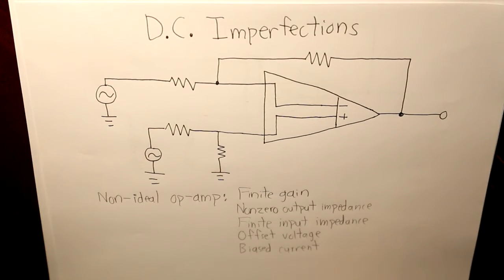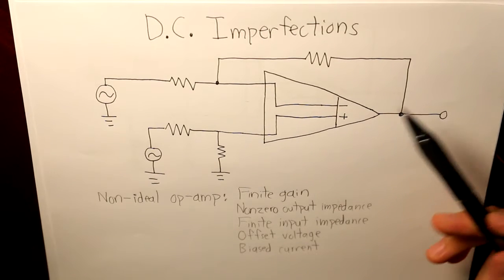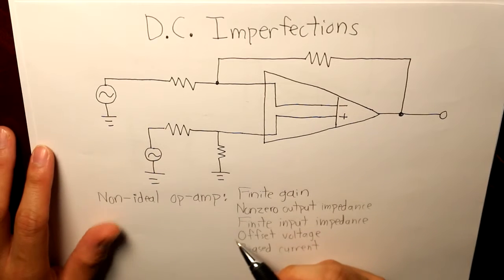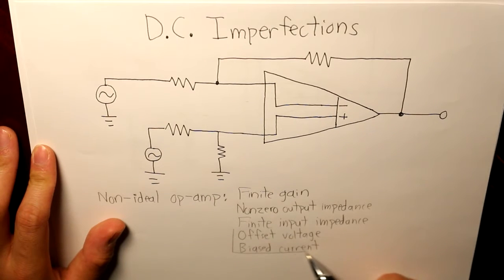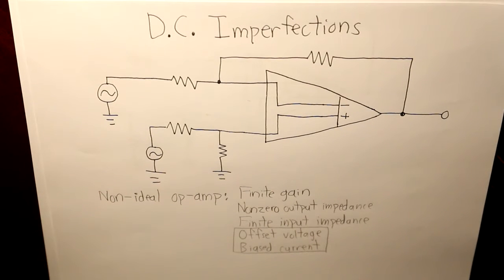And in this video and in my next video where I'm going to do a practical example of DC imperfections, we are going to focus on the emphasis of these last two characteristics, offset voltage and biased current.